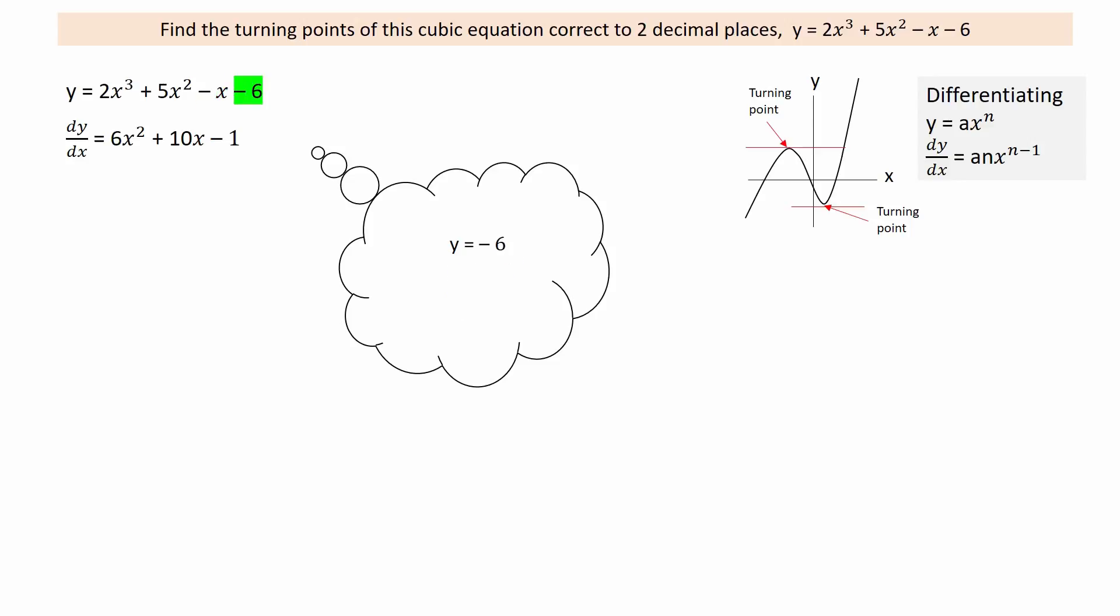Finally, the fourth term is minus 6. Y equal to minus 6 can be thought of as y equal to minus 6x to the power of 0, since anything to the power of 0 is always 1. Multiplying the constant minus 6 by the power 0 gives 0. Therefore, there is no need to go any further.